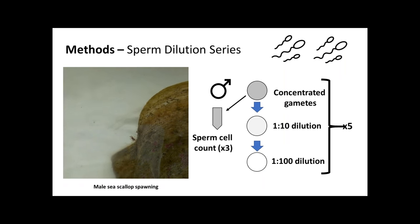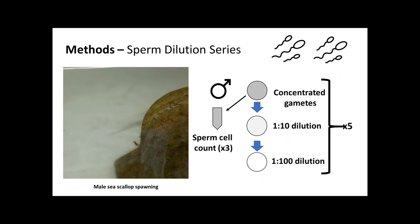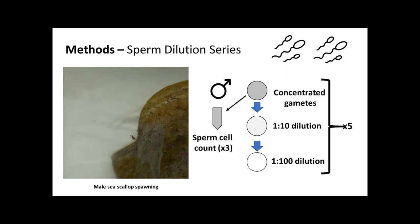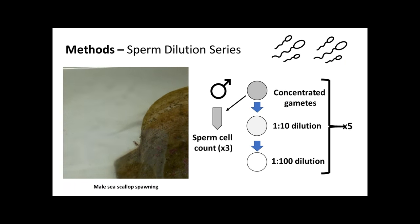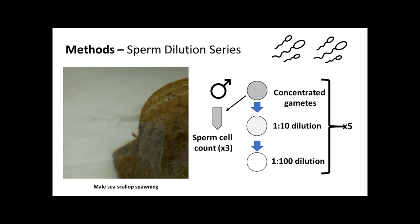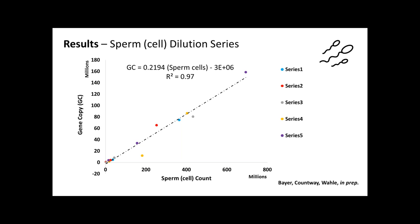Next, we got the males to spawn — which is hard — and we did five sets of sperm dilution series where we collected concentrated gametes and did dilutions, then did cell counts. We diluted by tenfold each time and did the cell count and gene copy number across the dilution series. This was actually a very good relationship — an expert I work with, Pete, confirmed it was a very clean line. This means when we take field samples, we can get the CQ value, then the gene copy number, and guesstimate how many sperm cells we're getting.